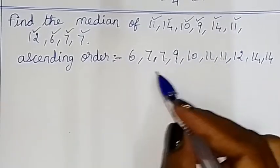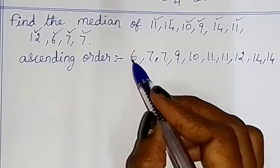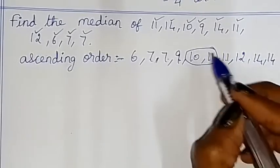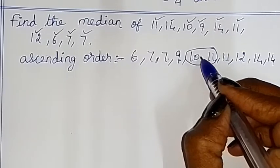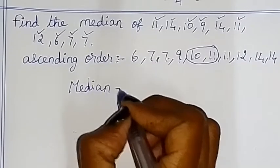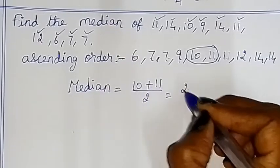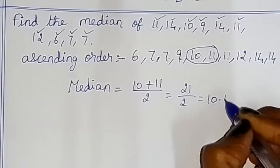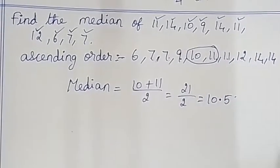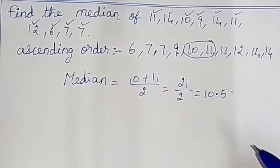We have 10 number of terms. With an even number of terms, there are two middle terms. We add them and divide by 2 to find the median. The median is (10+11)/2, which equals 21/2, which equals 10.5.